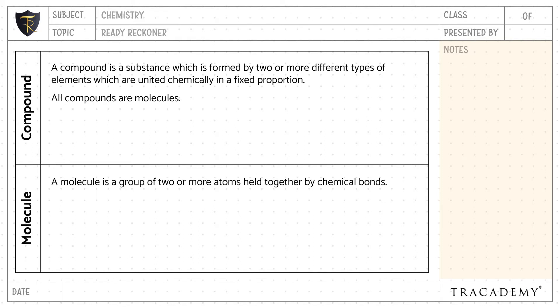All compounds are molecules, but all molecules are not compounds. An example of a compound is table salt, which is sodium chloride. An example of a molecule is ozone.